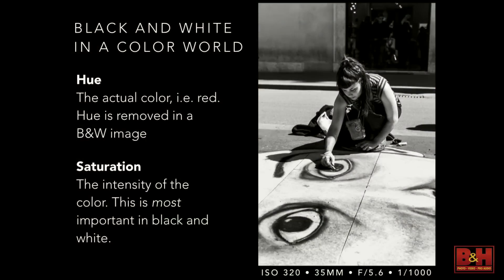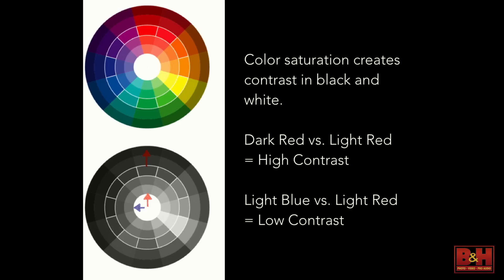Black and white in a color world — we need to pay attention to things when converting color images. The hue and saturation are really going to be key for creating contrast. As you can see from this color slider, as color saturation increases, the contrast between the black and white does too. The dark red has a lot of contrast versus the light reds.